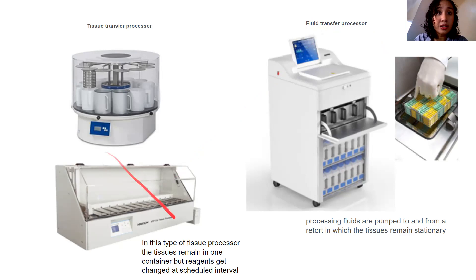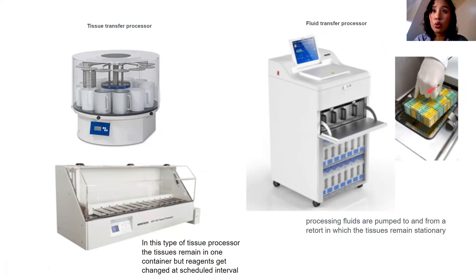In fluid transfer processing, the first reagent pumped is formaldehyde, then increasing concentrations of alcohol, then xylene, and then paraffin for infiltration. Fluid transfer processing only goes up through infiltration.